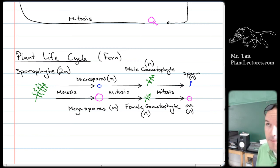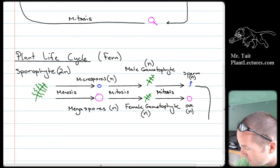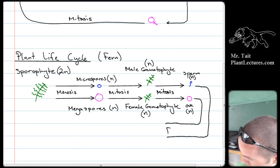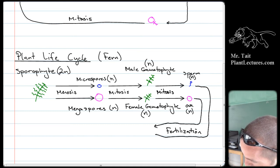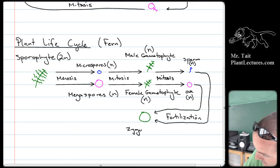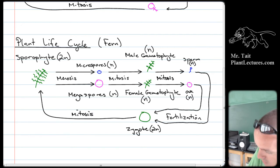Normally meiosis produces sperm and egg, but we can't use meiosis here because we're already n — you can't go to half-n. So it has to be mitosis. More accurately, meiosis produces gametes in animals, but in plants the process that produces gametes is actually mitosis. Fertilization then happens, producing a zygote that is 2n, and that zygote goes through mitosis to get back to a sporophyte.